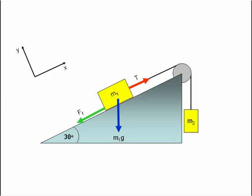With this problem, we have to draw free body diagrams for the two objects in the system, in other words, M1 and M2.